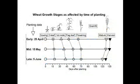In this graph, we are looking at the effect of planting date on the time to different growth stages of wheat. On the bottom axis, we've got days after planting. When we plant early, around the 25th of April, flowering is earlier than when we plant in mid-May or early June.